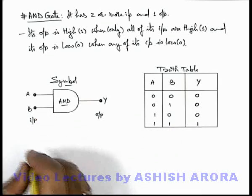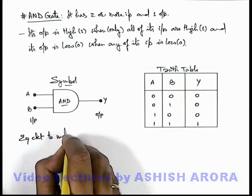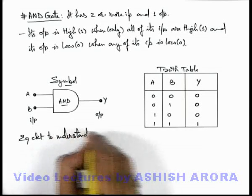Here for the same truth table, here we can draw the equivalent circuit to understand AND gate.